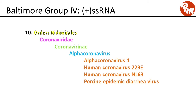Next, order nidoviralis, family Coronaviridae, subfamily coronavirinae, genus alpha coronavirus. This includes alpha coronavirus 1, human coronavirus 229E, human coronavirus NL63, and porcine epidemic diarrhea virus.